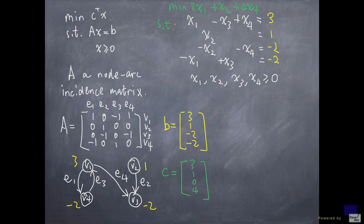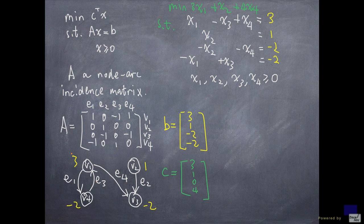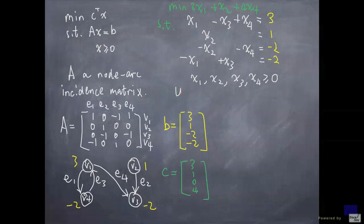Subject to this, we are looking for a way to ship goods on these arcs so that the conditions of surpluses and demands are met. And we want to do that at minimum cost. And such a problem is called an uncapacitated network flow problem.